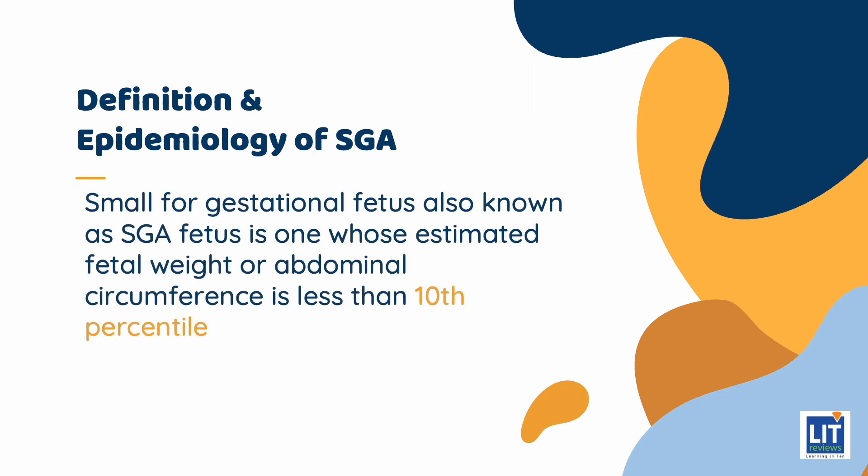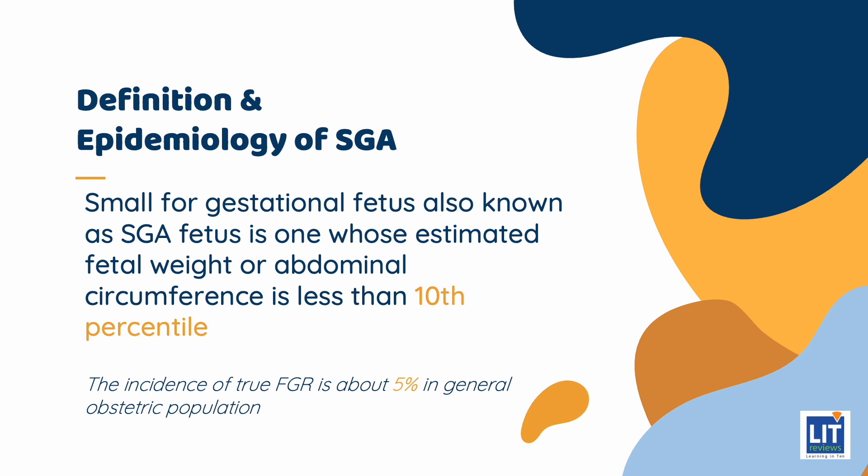A small for gestational age fetus, also known as SGA fetus, is one whose estimated fetal weight or abdominal circumference is less than the 10th percentile of that expected for that gestational age. The diagnosis can only be confidently made in accurately dated pregnancies. The incidence of true FGR is about 5% in the general obstetric population.